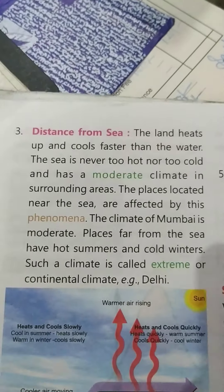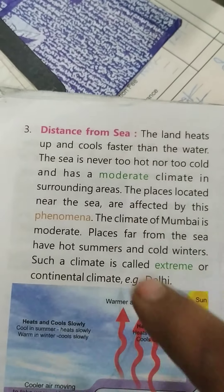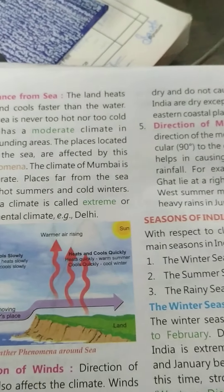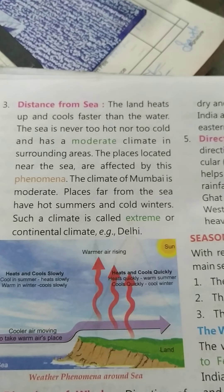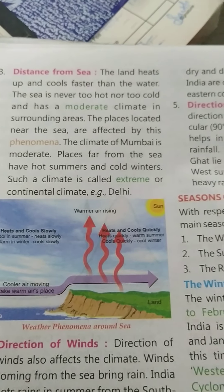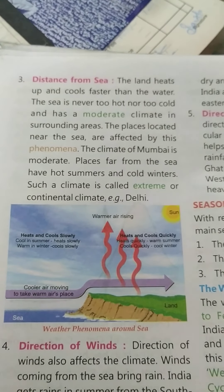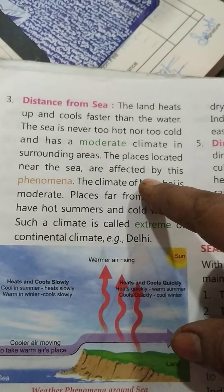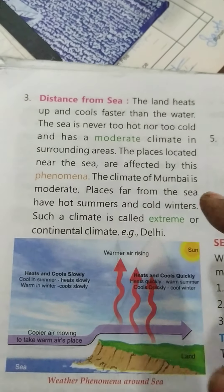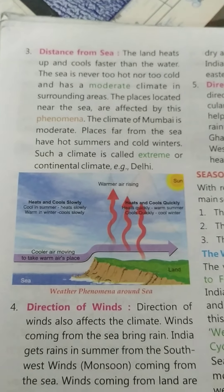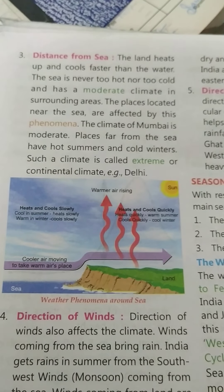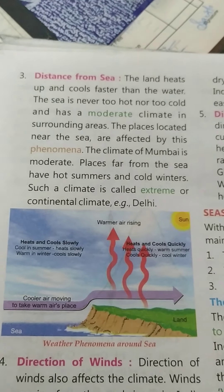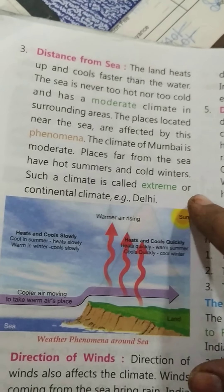The next factor is distance from the sea. Land heats up and cools down quickly, while the sea is never too hot or too cold — it has a moderate climate. Places near the sea, like Mumbai, have a moderate climate. Places far from the sea, like Delhi, have extreme climate — hot in summers and cold in winters.